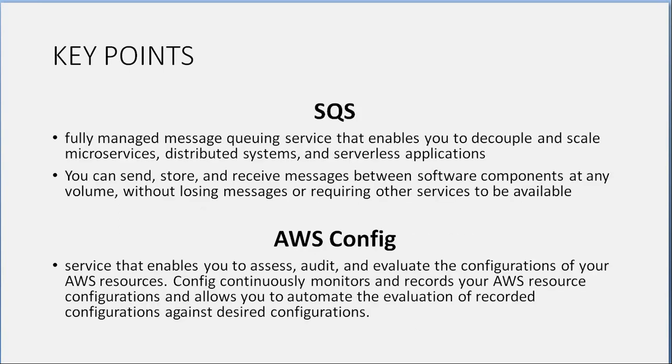SQS (Simple Queue Service): a fully managed message queuing service that enables you to decouple and scale microservices, distributed systems, and serverless applications. You can send, store, and receive messages between software components at any volume without losing messages or requiring other services to be available. AWS Config: a service that enables you to access, audit, and evaluate the configurations of your AWS resources — continuously monitoring and recording resource configurations and automating evaluation against desired configurations.